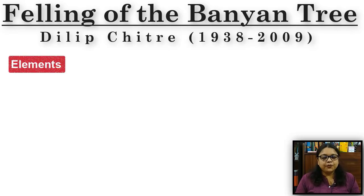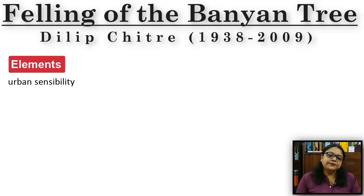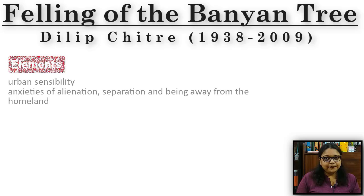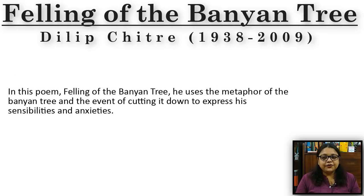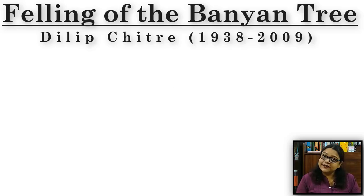The most important element in the poems of Dilip Chitre is the element of urban sensibility. He talks about the emotions and sentiments of the people living in the city, and through these poems he tries to bring out the anxieties of alienation, separation, and being away from the homeland. In this poem, 'The Felling of the Banyan Tree,' we will see how he uses the metaphor of the banyan tree and the event of cutting it down to talk about these emotions.